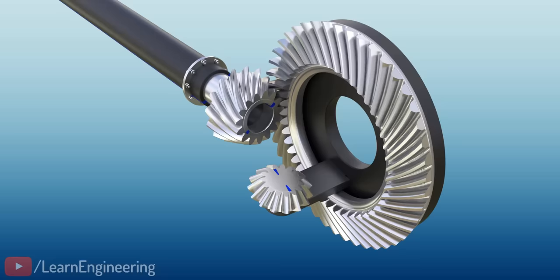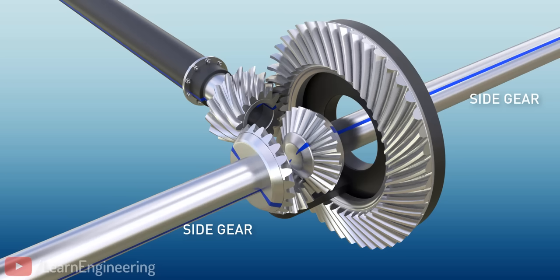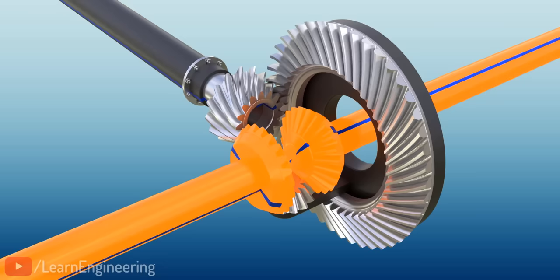The spider gear is meshed with two side gears, so power from the engine flows from the pinion to the left and right wheels, as shown. Now, let's consider different cases.